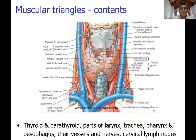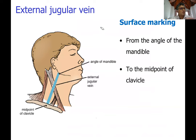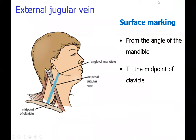The surface marking of the external jugular vein: draw a line from the angle of the mandible to the midpoint of the clavicle. For the internal jugular vein: draw a line from the midpoint between the tip of the mastoid process and the angle of the mandible, down to the sternoclavicular joint. The two veins cross each other — one superficial, one deep — forming an X shape.